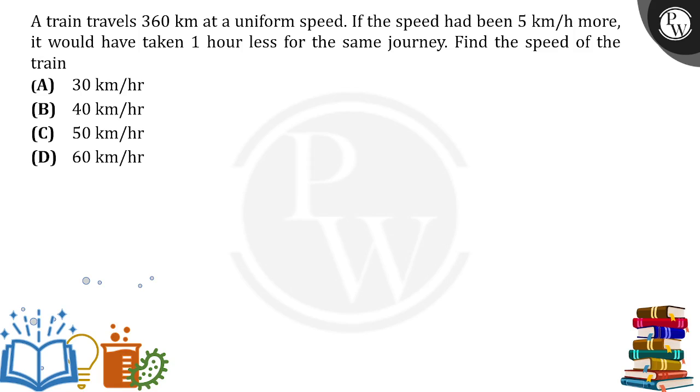So here, what is the given distance? The distance is 360 km. When the distance is 360 km, what we have to find is the speed of the train.